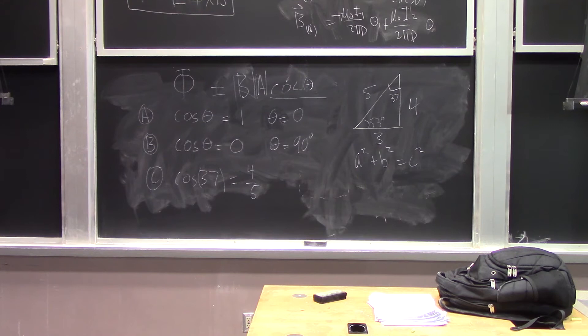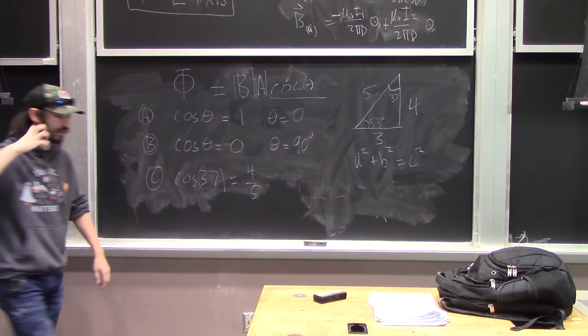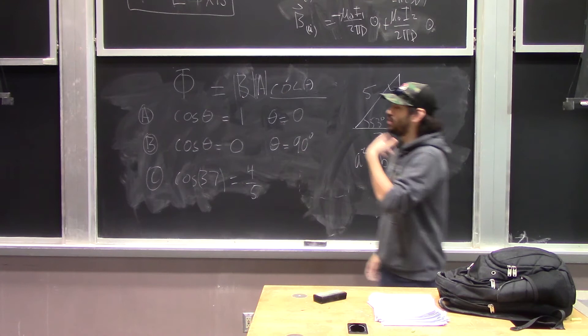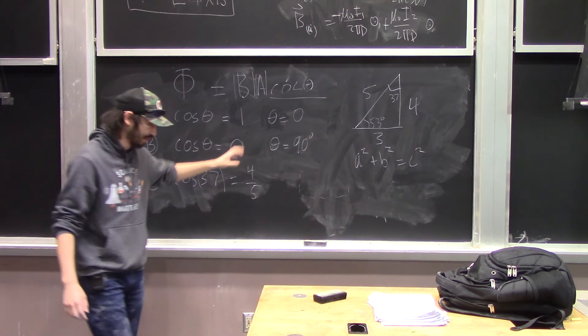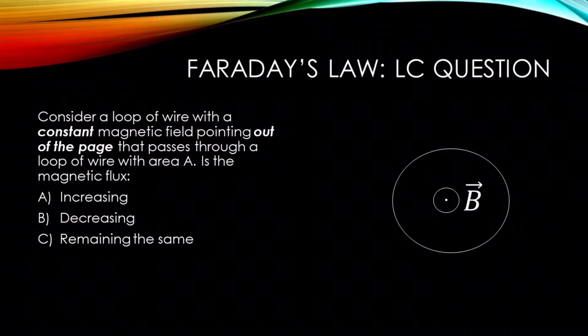Now we're getting into Faraday's Law and Lenz's Law — nature abhors changes in flux and acts to oppose them. We'll go through a series of similar questions: some magnetic field passes through a loop, and we ask whether the flux is increasing, decreasing, or staying the same, and what the induced field and current must do to oppose that change. First question: if the magnetic field through the loop is constant, is the magnetic flux increasing, decreasing, or staying the same?